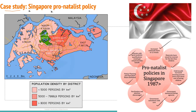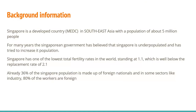Let's look at the case study of Singapore, which operates a pro-natalist policy. Singapore is a developed country — an MEDC — found in Southeast Asia with a population of around 5 million people. For many years, the Singaporean government has believed that Singapore is underpopulated and has tried to increase its population. Singapore has one of the lowest total fertility rates in the world, standing at 1.1, which is well below the replacement rate of 2.1. Around 36% of Singapore's population is made up of foreign nationals, and in some sectors like industry, 80% of workers are foreign individuals.